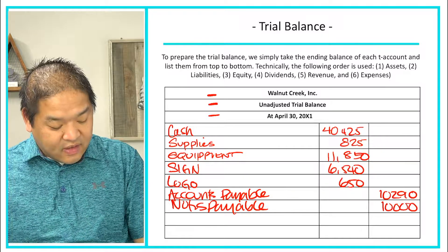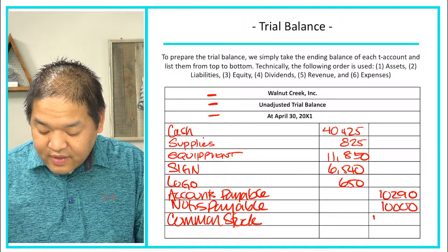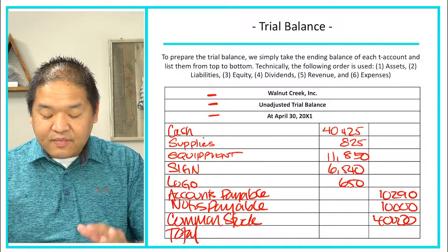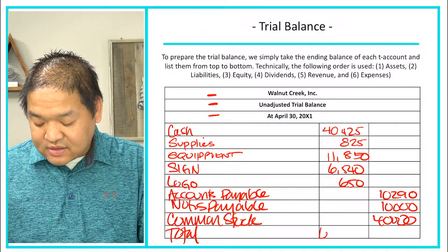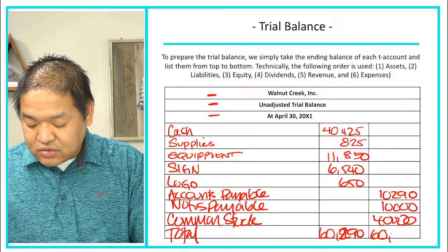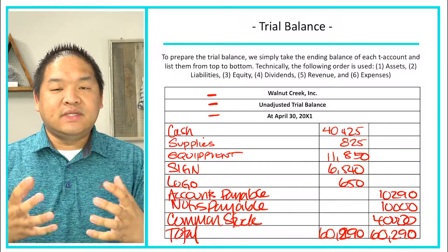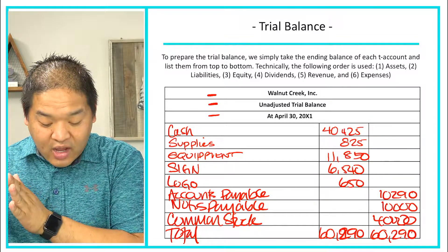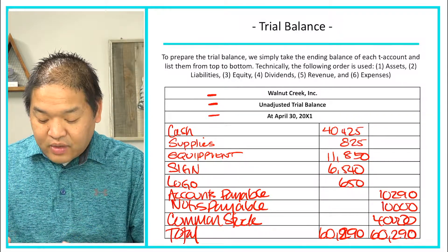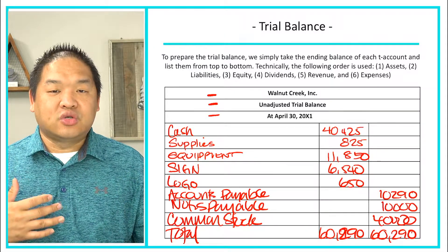Next we have common stock at $40,000. When we total up the columns, both the debit column and the credit column add up to $60,290. This means that for the most part the entries we did should be correct — unless we used the wrong account, we can assume the trial balance is correct, which means our journal entries are correct as well.